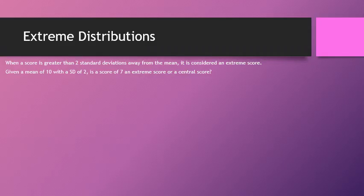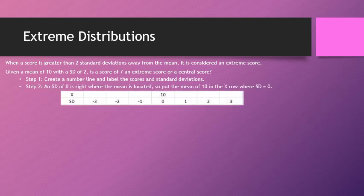Let's look at extreme distributions. When a score is greater than two standard deviations away from the mean, it's typically considered an extreme score. Say we have a mean of 10 and a standard deviation of 2. Is a score of 7 an extreme score, or is it a central score within the 95% of scores that are within two standard deviations of the mean? Step one: create a number line and label the scores and standard deviations.